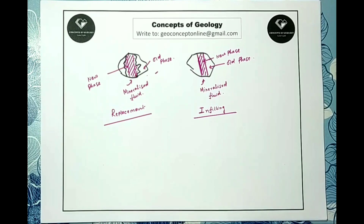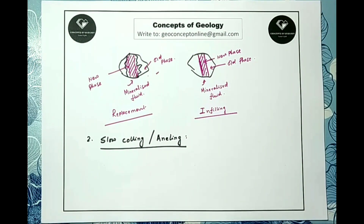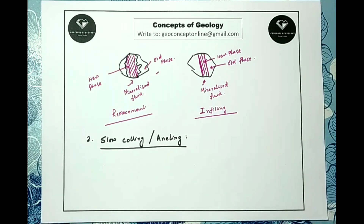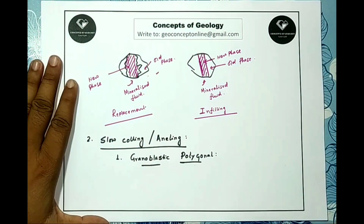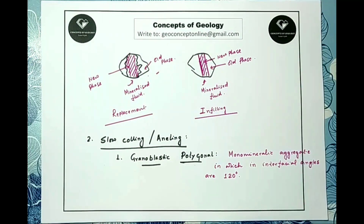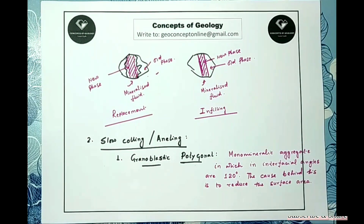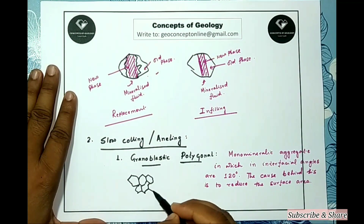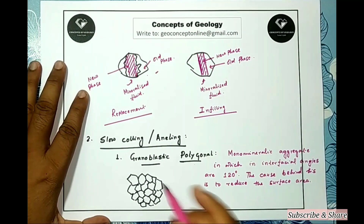The next factor that modifies a primary texture is slow cooling, or annealing. Slow cooling after crystallization produces strain-free, large equant grains with straight boundaries. The driving force is the reduction of surface area and interfacial tension. In monomineralic aggregates the interfacial angles tend to be 120°. This texture is called granoblastic polygonal.